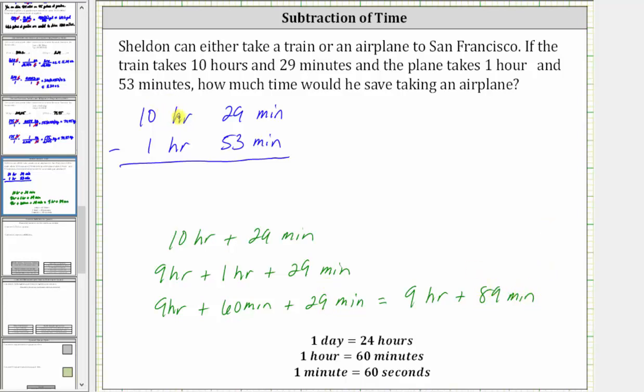So by performing an exchange with one of the 10 hours here, this changes to nine hours, and then we add 60 minutes to 29 minutes, giving us 89 minutes. So we can write this difference as nine hours, 89 minutes minus one hour, 53 minutes.